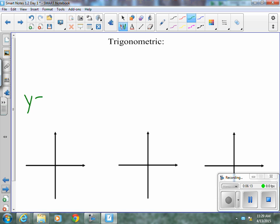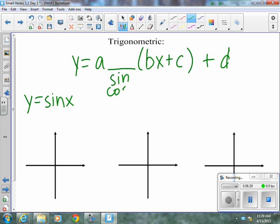Trigonometric. And these can be in the form of, technically, a trig function bx plus c plus d. Any of that a, b, c, or d could be numbers there. And what's here could be sine, cosine, tangent, secant, cosecant.